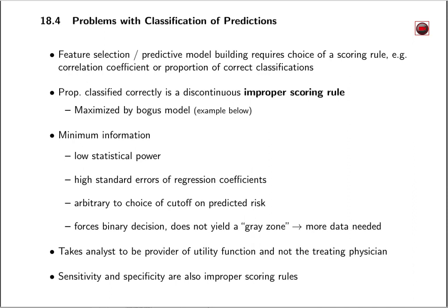Using less information results in lower statistical power and higher standard errors. Classification and classification accuracy are extremely arbitrary to the choice of the cutoff. It also implies that you're making a binary decision and you're not entertaining a gray zone of intermediate prediction that would dictate that more data should be obtained before a decision is made.